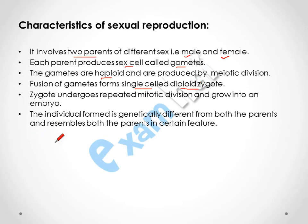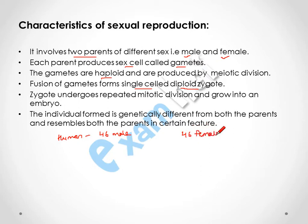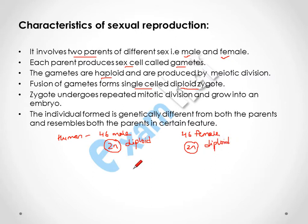For example, in humans, the number of chromosomes is 46. In the male it is 46 and in the female it is also 46 — this is the diploid (2n) condition. After this, meiotic division takes place and the 46 chromosomes are divided into two sets of 23.